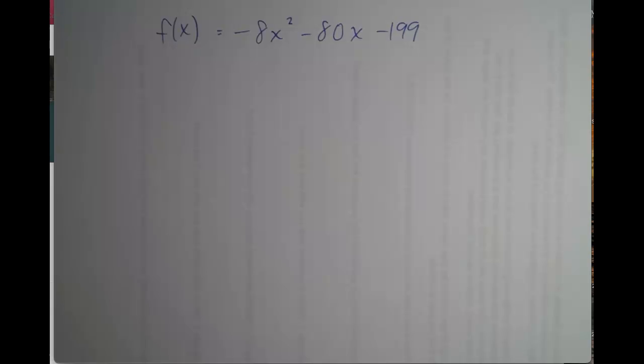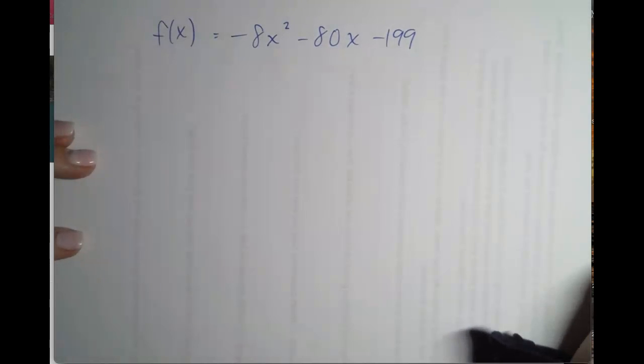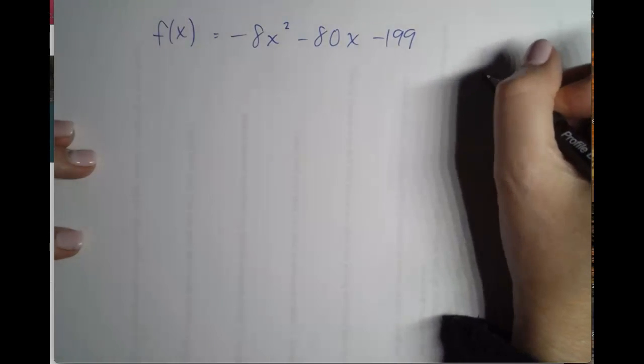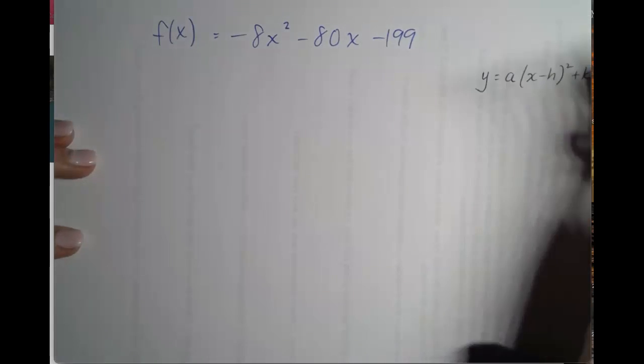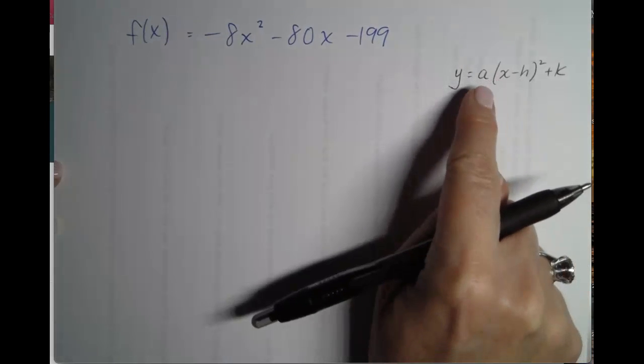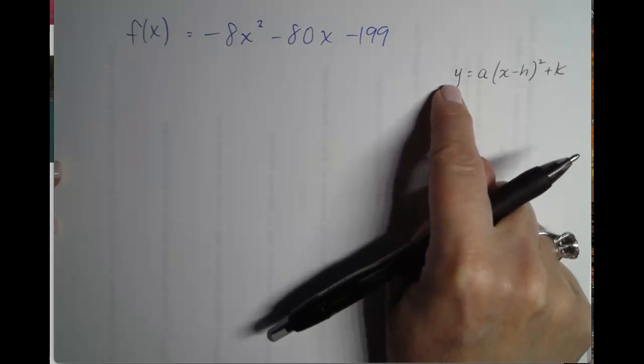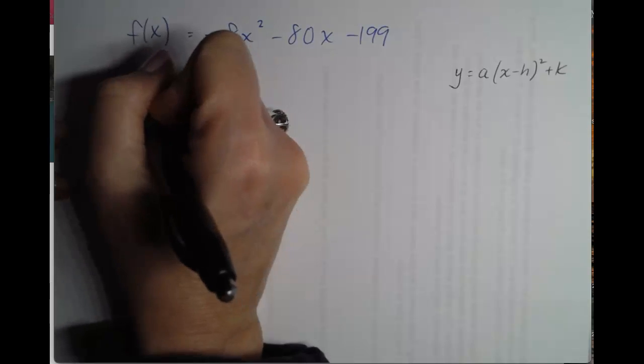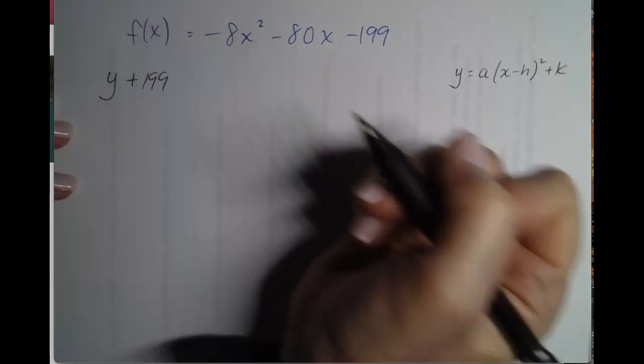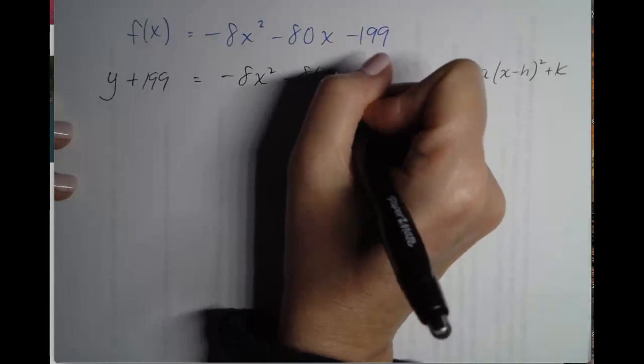Similar situation. We're going to go through the steps again just a little bit faster this time. Remember, this is a quadratic form. We are trying to go to the vertex form: y equals a times x minus h squared plus k. This is where we're going. So what are we going to take out first? First we're going to move the k over. Change it to y, move the k over. Let's do that in one step. So y plus 199 equals negative 8x squared minus 80x.